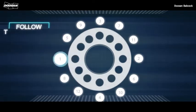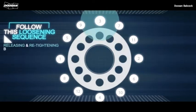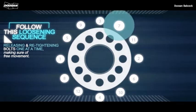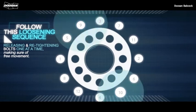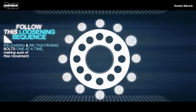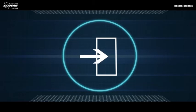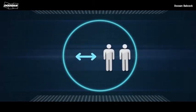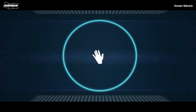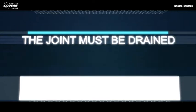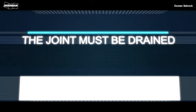If safe to continue, re-tighten the three bolts, then follow this loosening sequence, releasing and re-tightening bolts one at a time, making sure of free movement. Each bolt head or nut must be secured on the other side by a spanner and lanyard. Make sure you communicate with colleagues to coordinate your actions. Identify and maintain a safe means of escape. Do not operate equipment unless you're both in a safe position, and keep hands and fingers clear of any points of impact. The joint must be drained in a controlled manner, with any liquid collected continuously in drip trays or gullies.